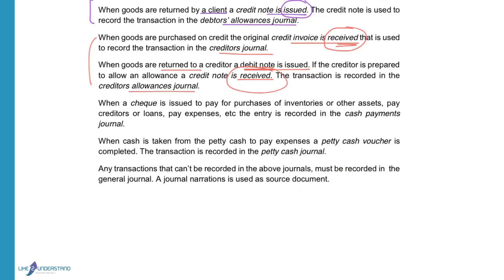When a cheque is issued to pay for purchases, inventories, other assets, creditors, loans, or expenses, the entry is recorded in the cash payments journal. So any money paid out of the business will be recorded in the cash payments journal. The cheque counterfoil will be used to record the entry, or if electronic transfer was used, then the electronic transfer or the bank statement will be used as a source document.